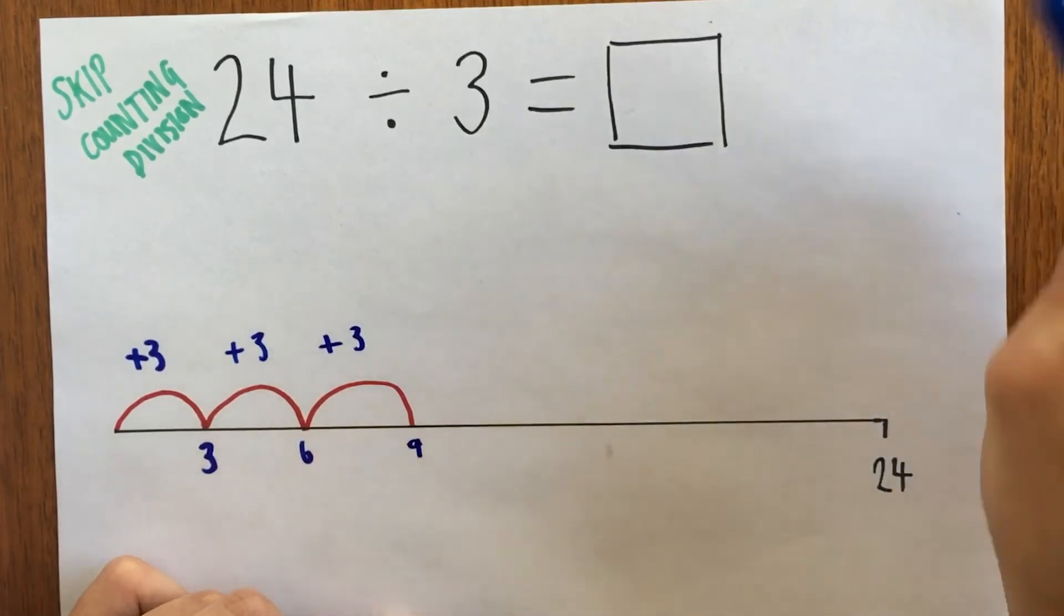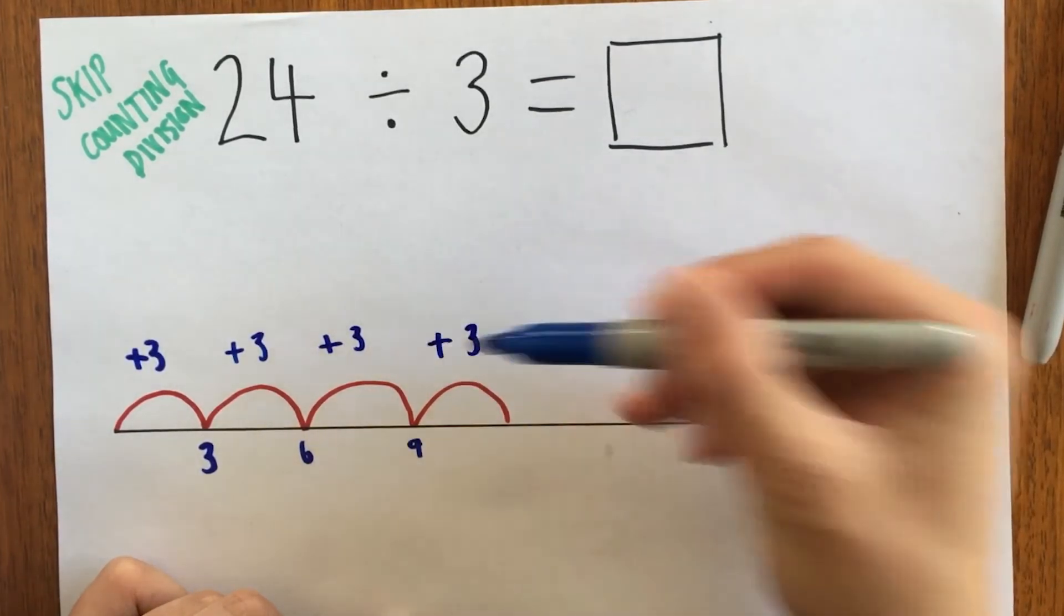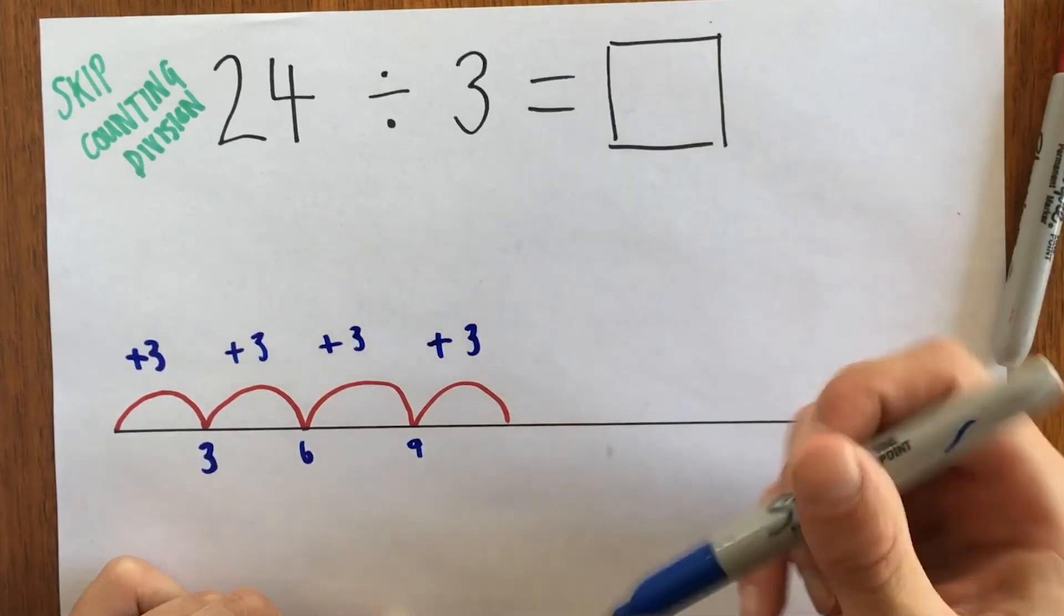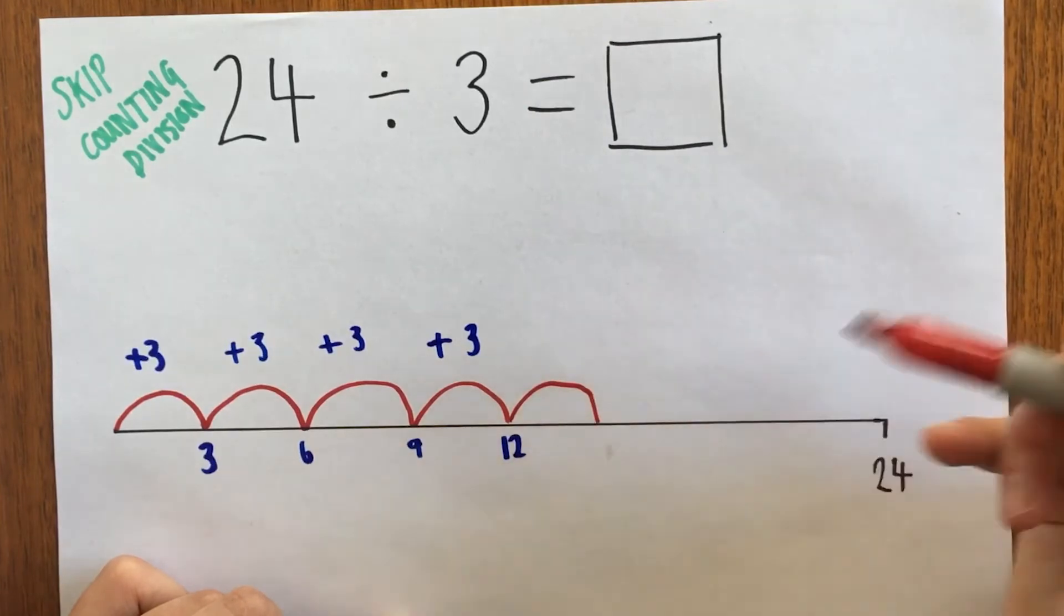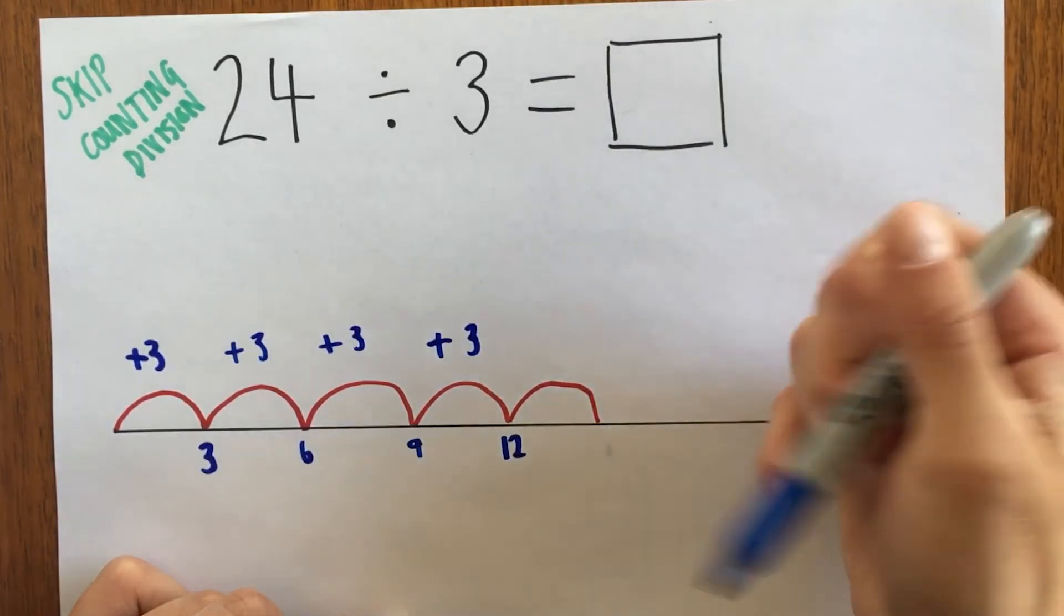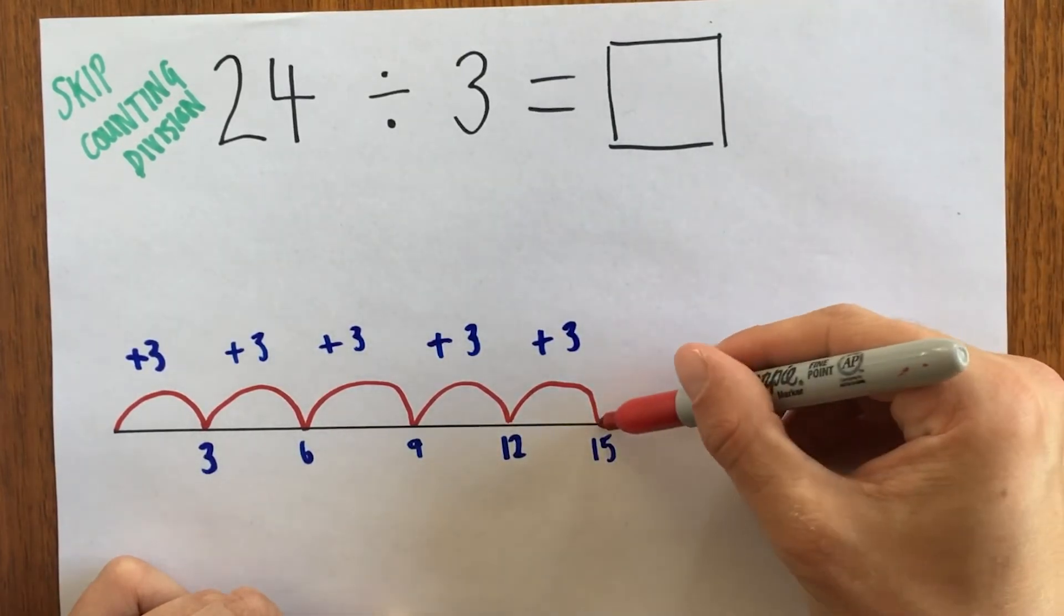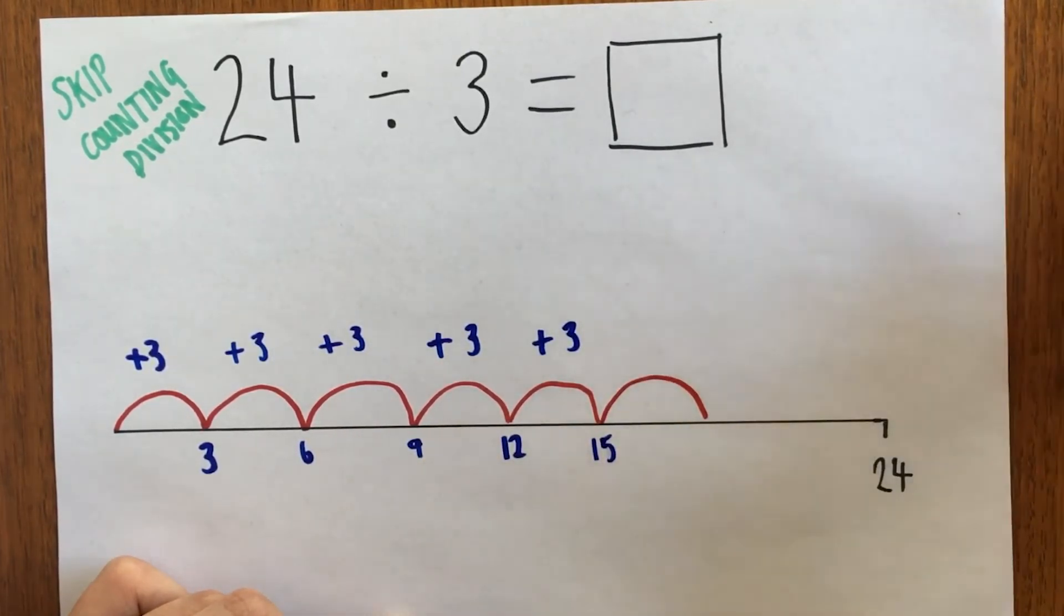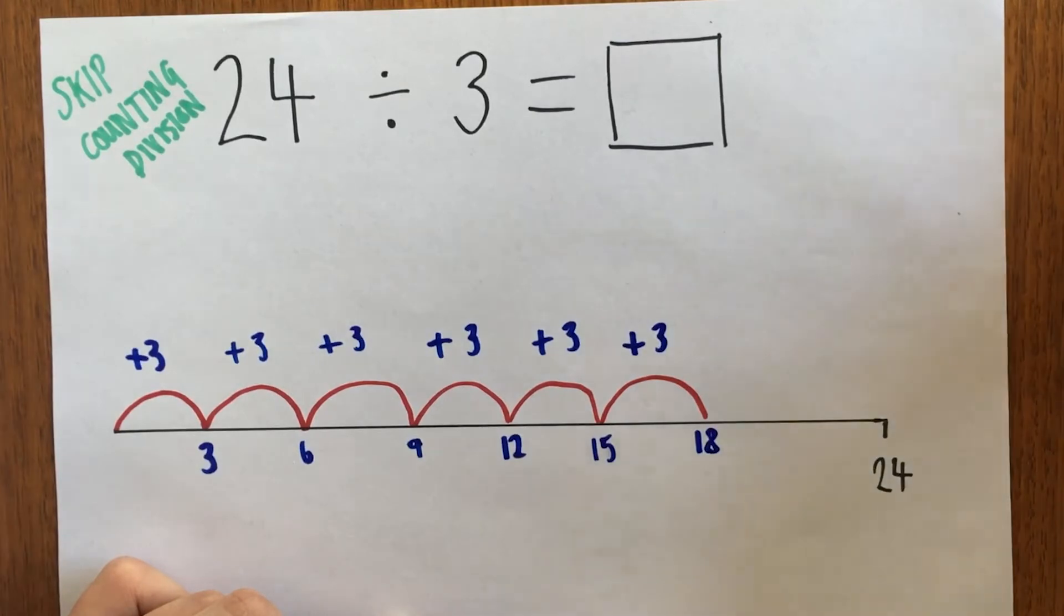We'll go to 9. The only trick with this is to make sure that you get enough room to fit in all the jumps that you need. Don't make your jumps too big. Keep going. Now I'm on 15. I'm starting to think I'm not far off 24. I only think I need a couple more jumps, so I've probably spaced out my jumps pretty well here.